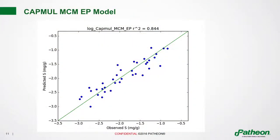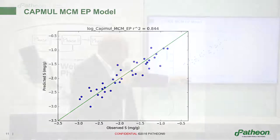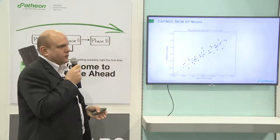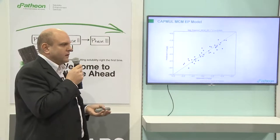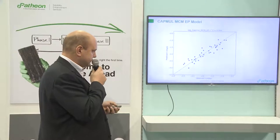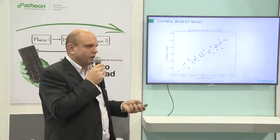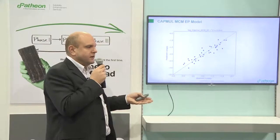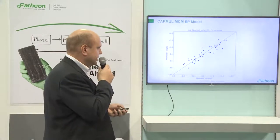Here is an example using Cremophor, a much-used oil vehicle for lipid formulation. The observed solubility is well correlated with the predicted solubility, giving initial estimates about how well an API will dissolve in the lipid vehicle. We don't run these models to replace experiments, but to guide experimentation when looking at different screens.